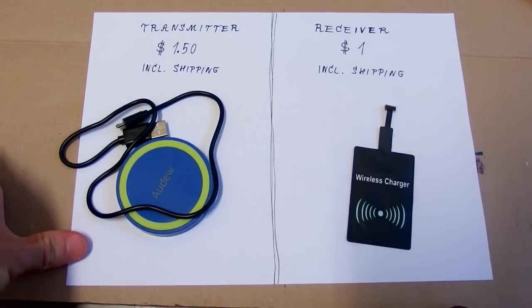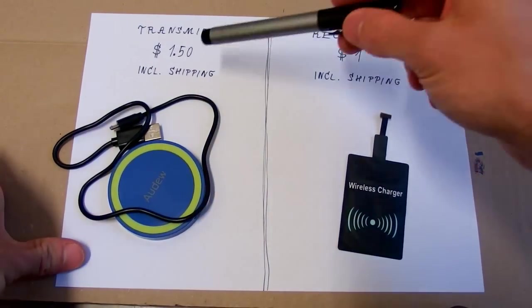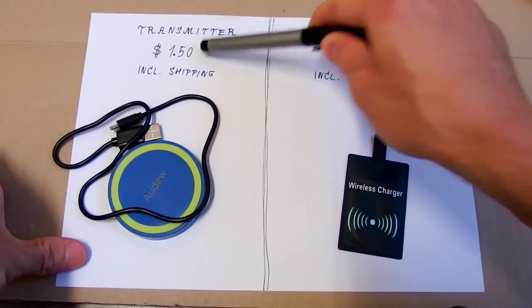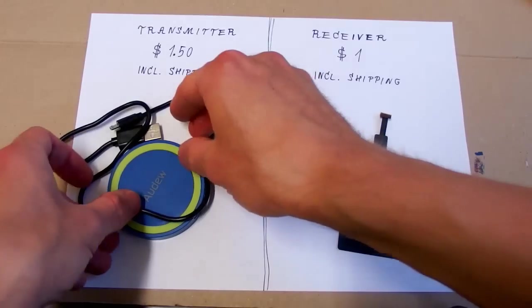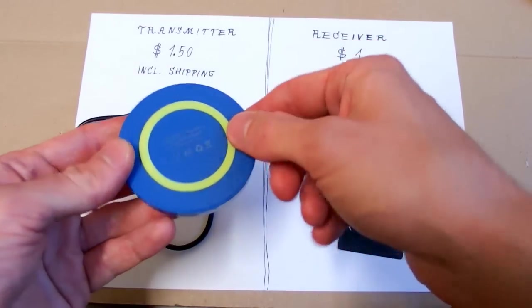I have bought it separately on eBay. The transmitter was $1.50 including shipping and the receiver was $1 including shipping. And it seems like I will have to open it first and then test it.